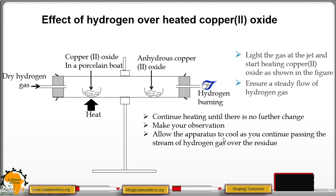Allow the apparatus to cool as you continue passing the stream of hydrogen gas over the residue. Disconnect the apparatus and test the colorless liquid in the cooler parts of the combustion tube.